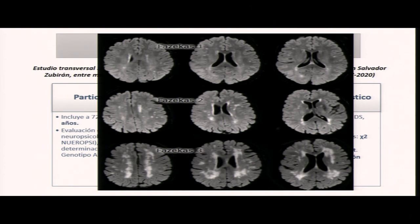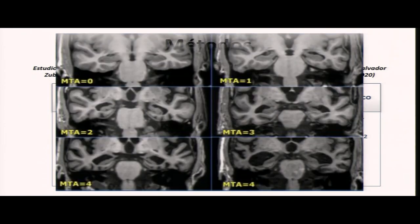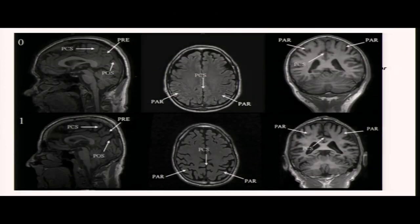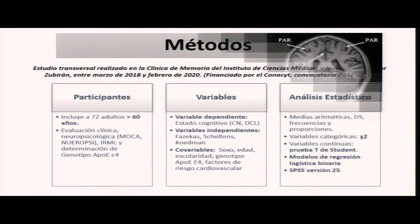La escala de Fazekas va de 1 a 3 y a mayor puntuación hay mayor concentración de la denominada enfermedad de pequeño vaso. La escala de atrofia temporal medial de Scheltens evalúa la longitud del hipocampo, el diámetro del cuerno temporal y de la fisura coroidea. También analizamos la escala de Koedam, que evalúa estructuras posteriores parietales y la presencia o el tamaño de la precuña. Estas tres escalas visuales tienen una replicabilidad inter-observador muy confiable.